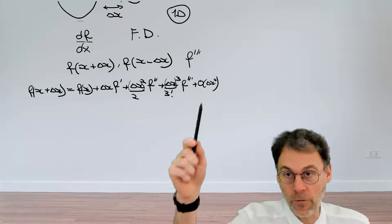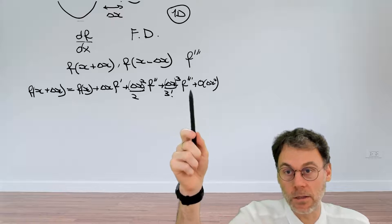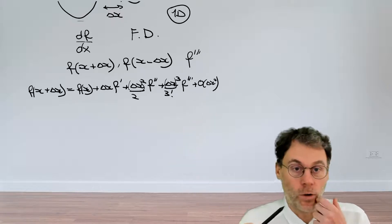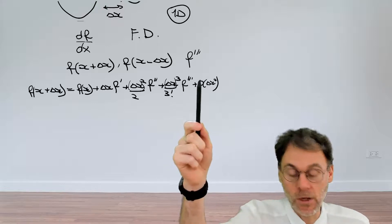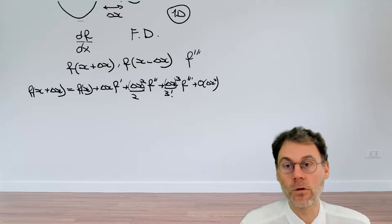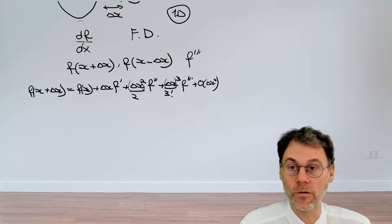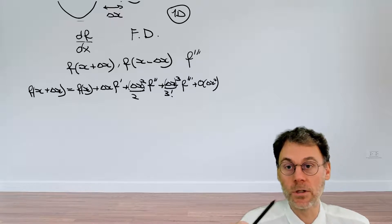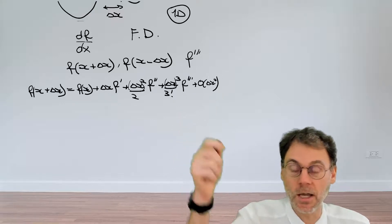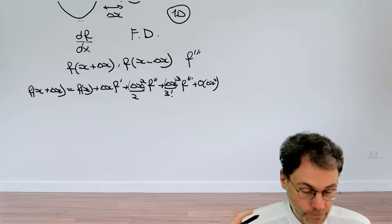So if you halve the grid size, the error you make by stopping at this point will scale by a factor of 2 to the power of 4. This big-O symbol is a very important symbol when constructing numerical approximations, because it tells you how the error scales as a function of the grid size.